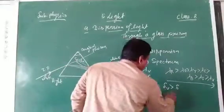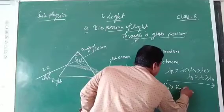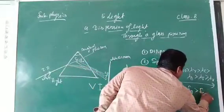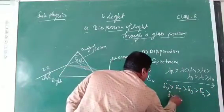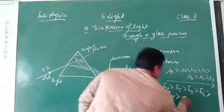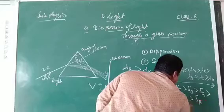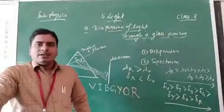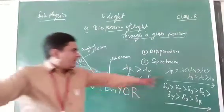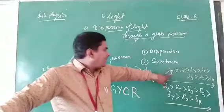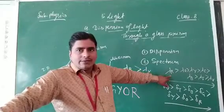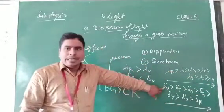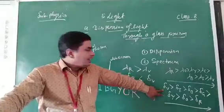We can write the decreasing order of angle of deviation as: delta-V, then delta-I, then delta-B (blue), then delta-G (green), then delta-Y (yellow), then delta-O (orange), then delta-R (red). This is the decreasing order of angle of deviation. Maximum angle of deviation belongs to violet and minimum angle of deviation belongs to red.